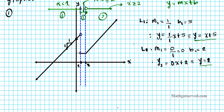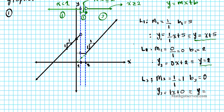For L3, the slope of the third line is rise over run. Pick two points: we rise one and run one, so one over one equals one. The y-intercept — extend this line straight down to the y-axis — we can clearly see that the y-intercept is zero. So b of three is zero. That means y three, the equation of the third line, is one x plus zero, which is the same as y equals x.